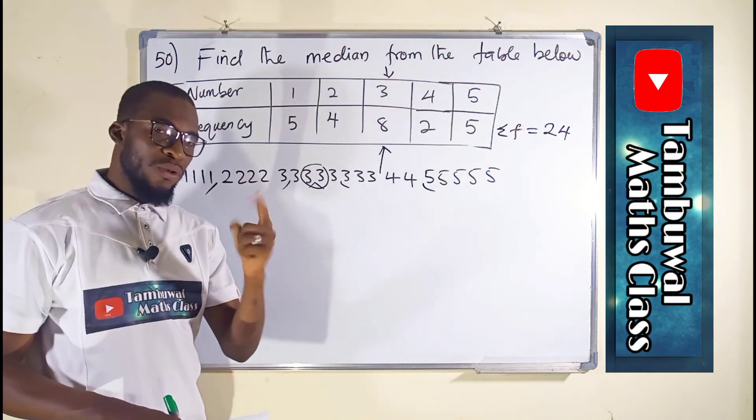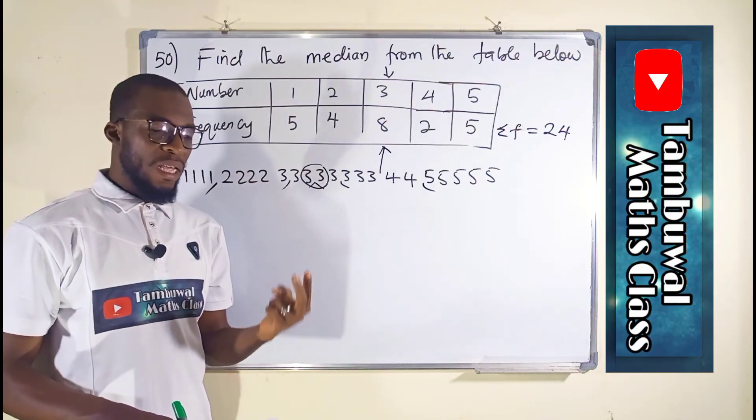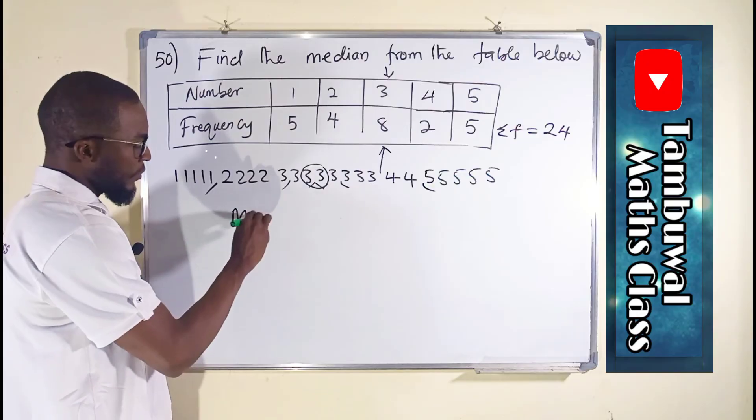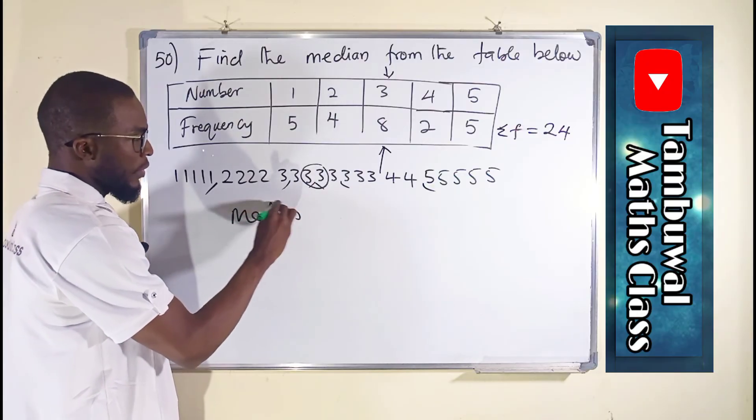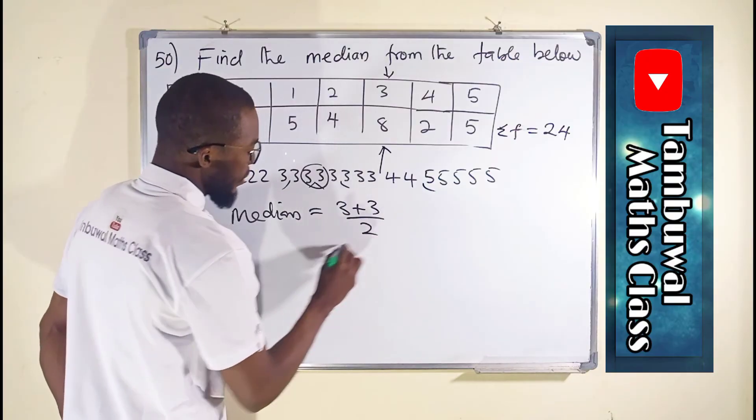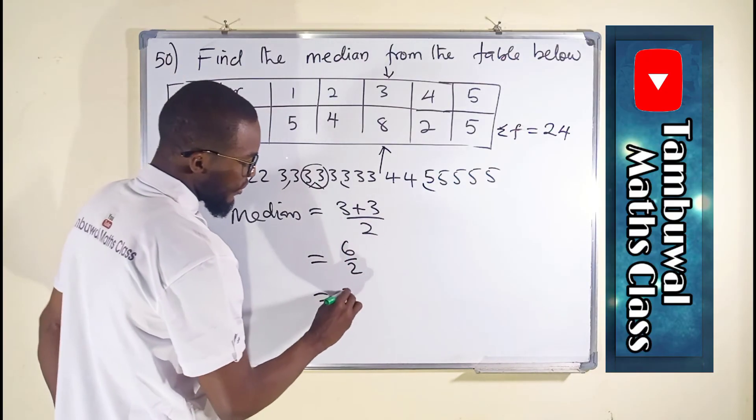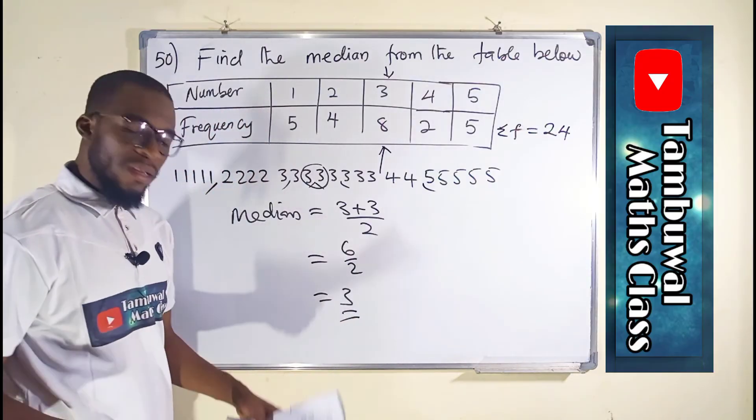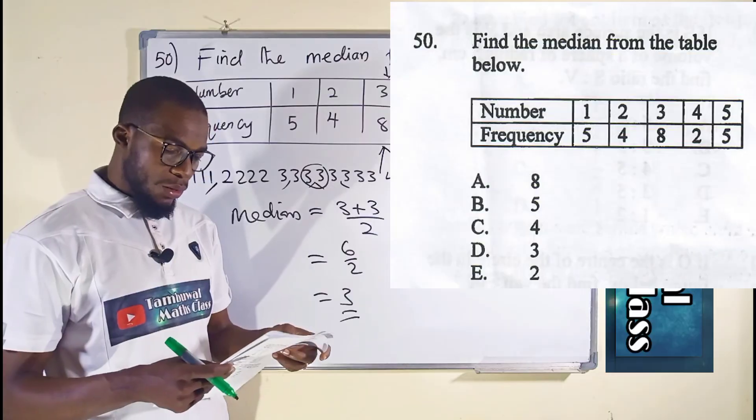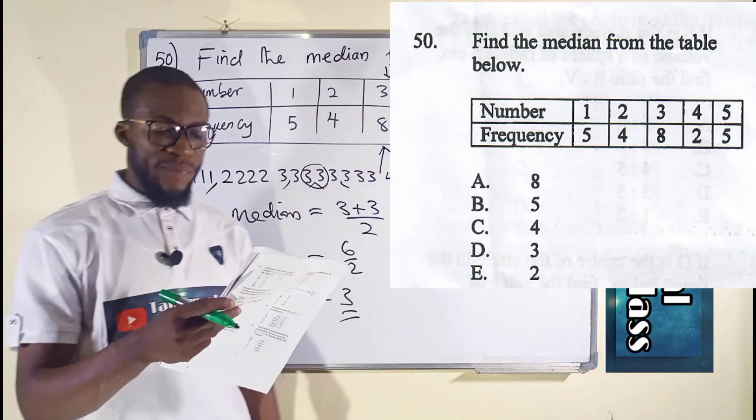We are not going to take just one of them. If it is one number, you take it as your median. If you find you have 2 middle numbers, you sum them and divide by 2. So our median will be equal to 3 plus 3 divided by 2, which is 6 over 2, which equals 3 as required. 3 is our median, which is option D. So now let us move on to question number 51.